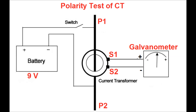Then a very important test — the polarity test of the CT. For this test, a 9V battery is connected on the primary side: P1 is connected via a switch to the positive terminal of the battery and P2 is connected to the negative terminal. A galvanometer is connected on the secondary side. When a positive kick is given by closing the switch, there will be a positive deflection in the galvanometer on the secondary side of the CT, and when the switch is opened there will be a negative deflection. By this we can conclude that the polarity of the CT is connected properly.